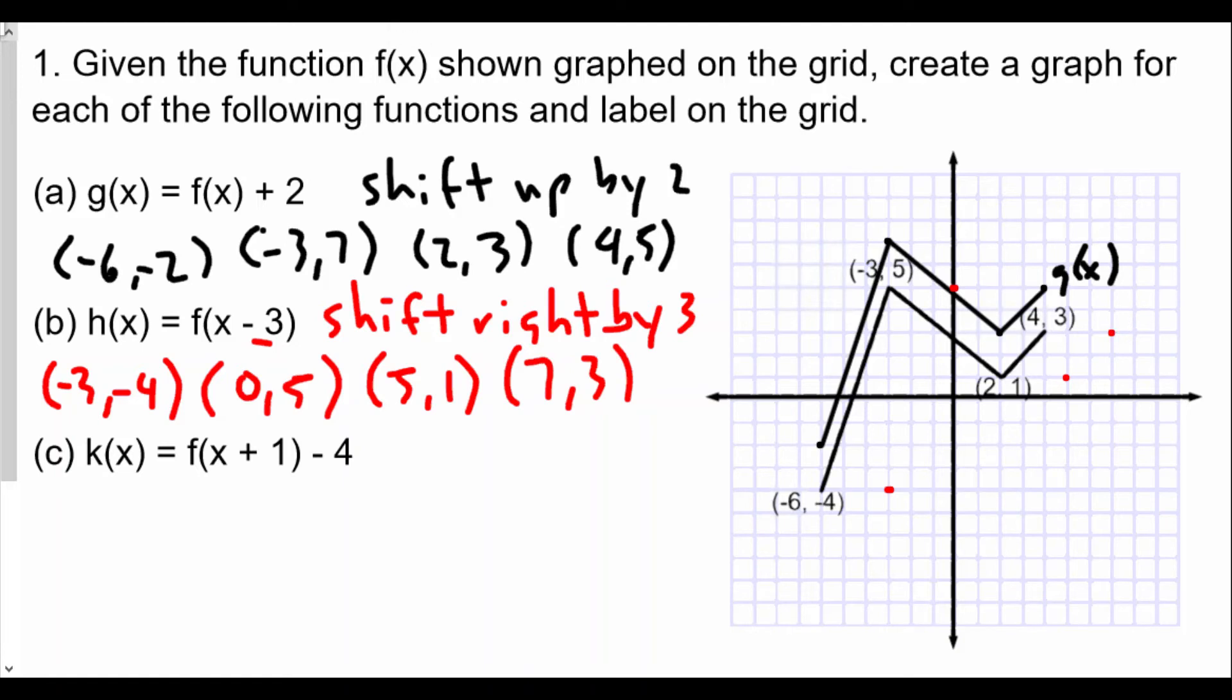And we're going to connect these coordinates. I'm going to use the dashed line here for the red coordinates. And we'll see in this case that it is the same as the original f(x), except shifted to the right by 3. So this is going to be h(x).